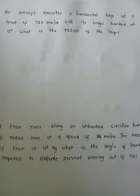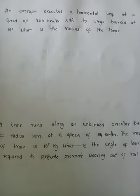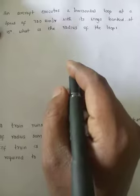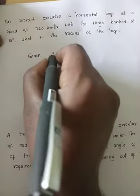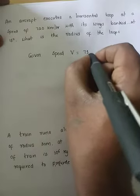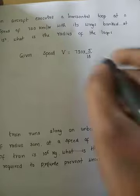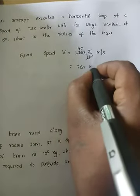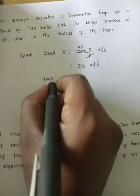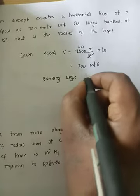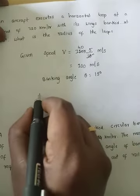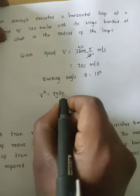An aircraft executes a horizontal loop at a speed of 720 km/h with its wings banked at 15 degrees. What is the radius of the loop? Given: speed of the aircraft v = 720 × 5/18 = 200 m/s, banking angle = 15 degrees. We already derived the expression: v² = rg·tan θ.